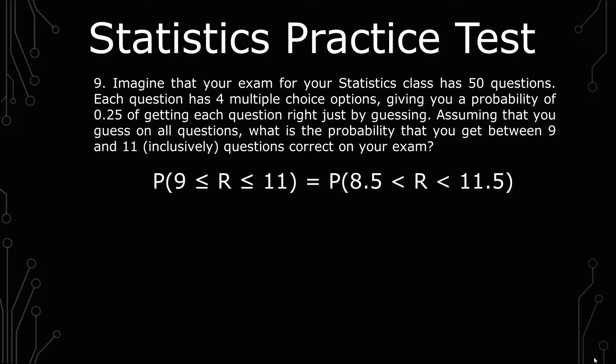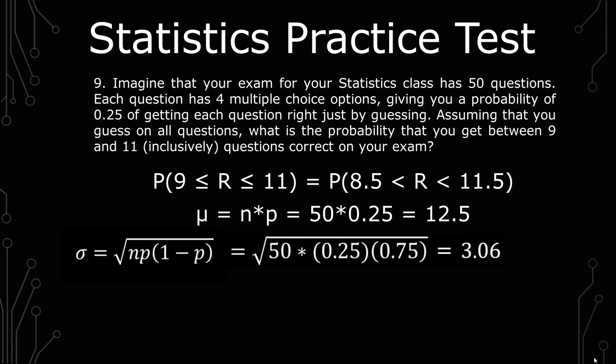And so we then calculate the mu or the n times p part of this calculation to get 50 times 0.25 to give us 12.5. Those are how many questions we're expected to get right just by guessing. The standard deviation is the square root of np times 1 minus p, which gives us 50 times 0.25 times 0.75, which gives us 3.06.